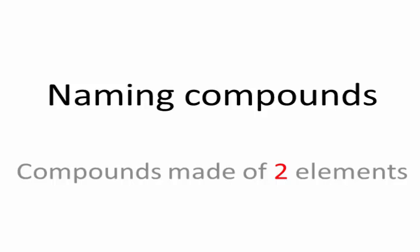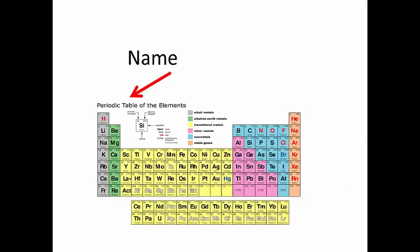The general rule for naming these compounds is that you give the name of the element furthest on the left of the periodic table, followed by the one further to the right on the periodic table, and its ending must be -ide.